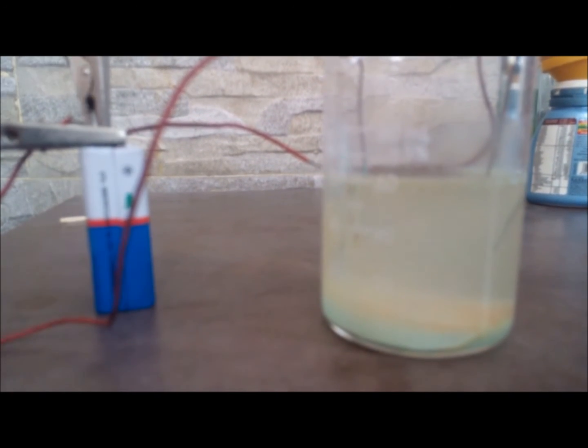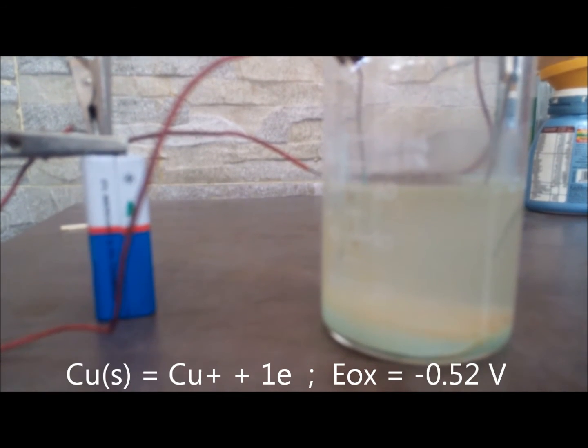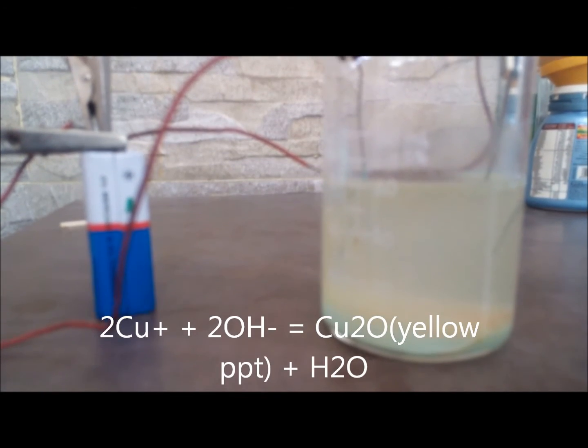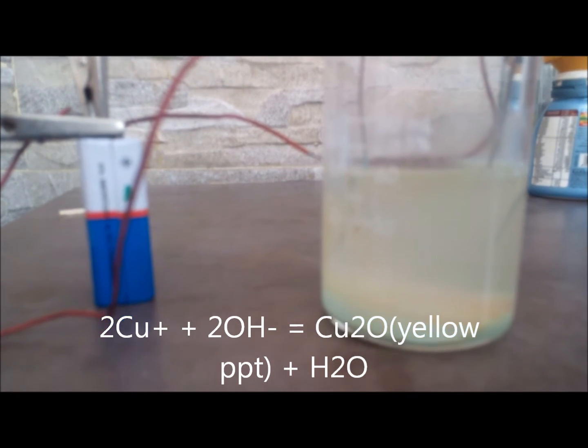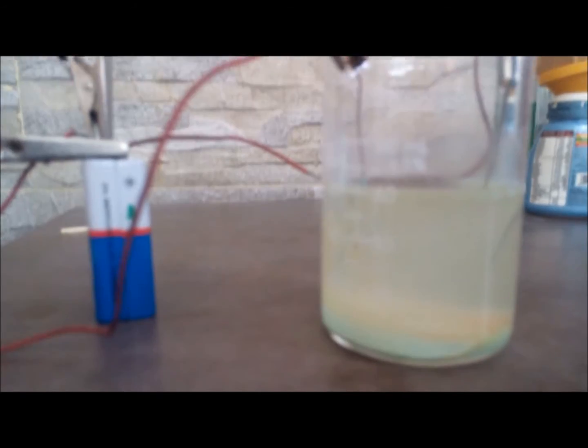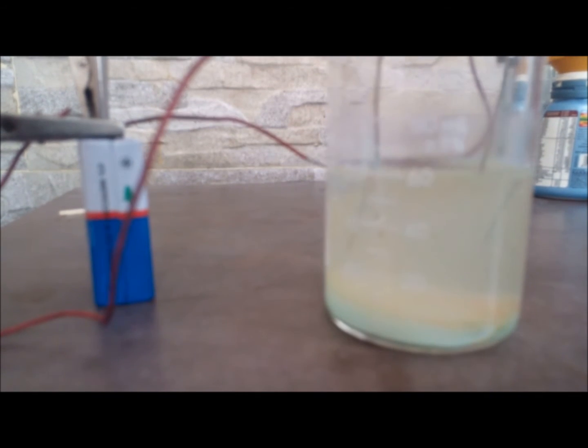But now with time, copper is being oxidized to more of cuprous ion. So we know that cuprous oxide is green, yellow, red in color. So here is the coloration you can see.